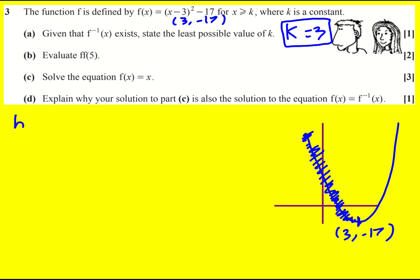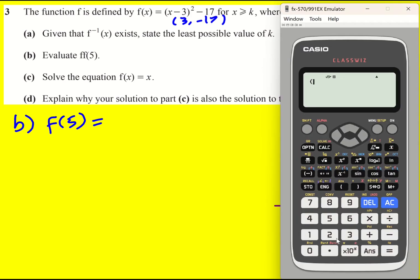All right, next up evaluate f of f of 5. So I'm going to work out f of 5 first of all, put that in. To be honest just easiest I think just to put in the calculator. Okay it's going to be 4 minus 17, actually minus 13.